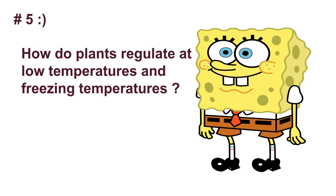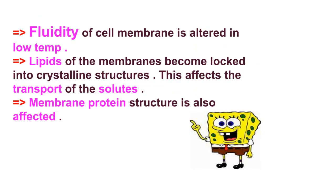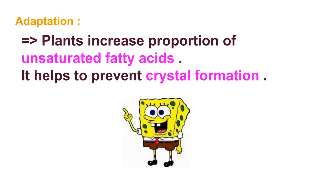Question number five: how do plants regulate at low temperatures and freezing temperatures? The fluidity of the cell membrane is altered at low temperature. Lipids of the membranes become locked into a crystalline structure, which affects the transport of solutes. Membrane protein structure is also affected. The adaptation is that plants increase the proportion of unsaturated fatty acids, which helps to prevent crystal formation.